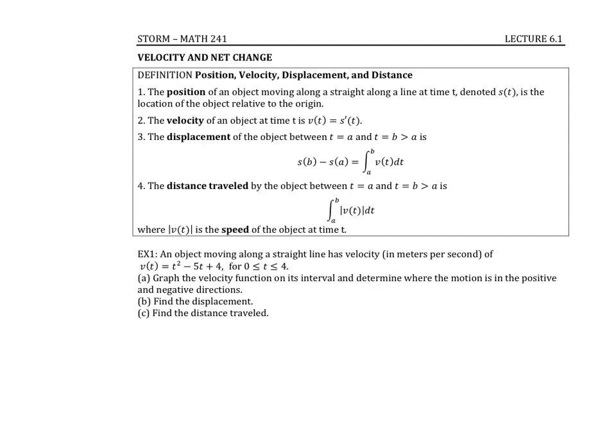In section 6.1 we're going to revisit position, velocity, and acceleration. We use s(t) for our position function, and when we talk about the position of a function we're going to assume that our objects are moving along a straight line. Recall that velocity is simply the derivative of the position function.